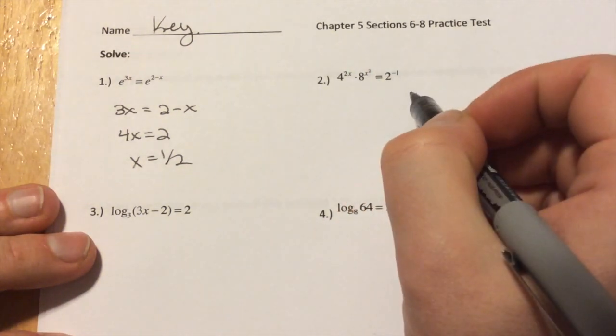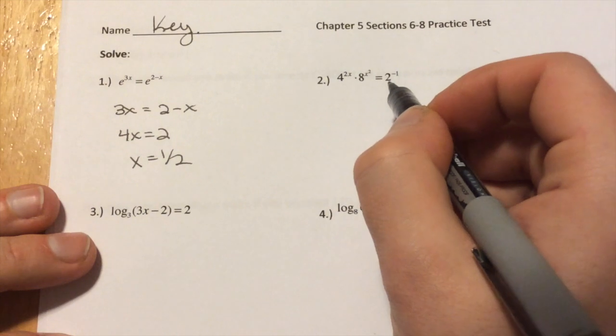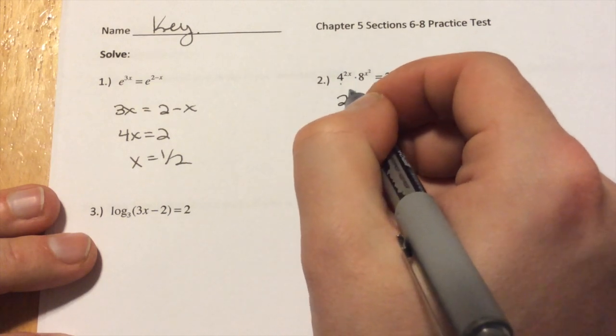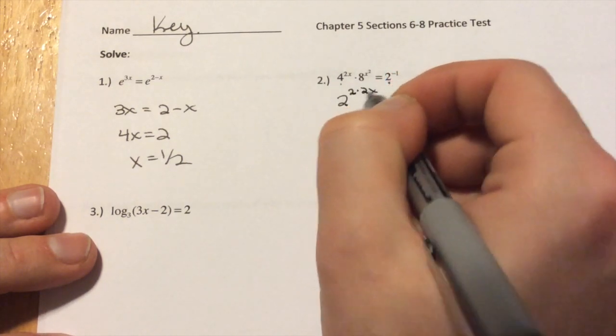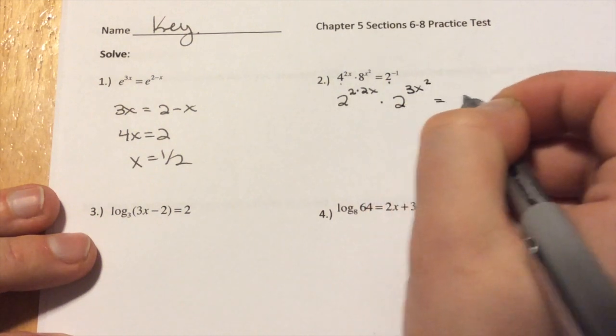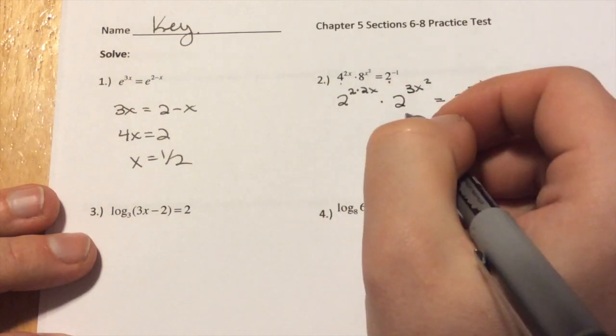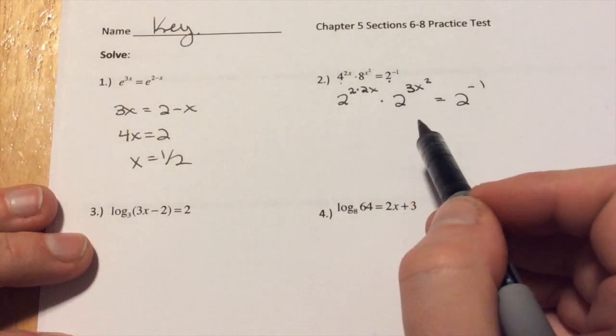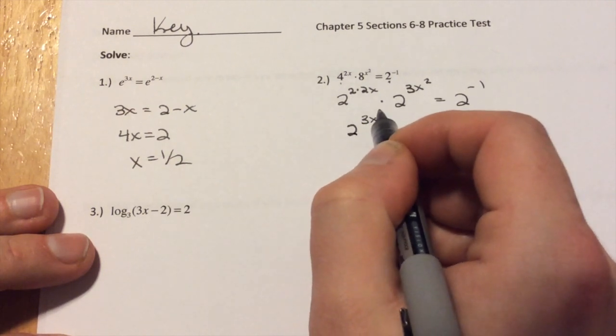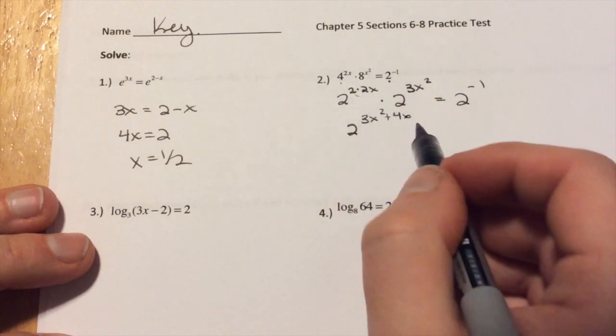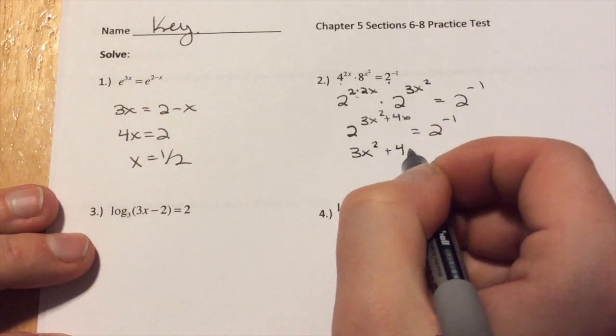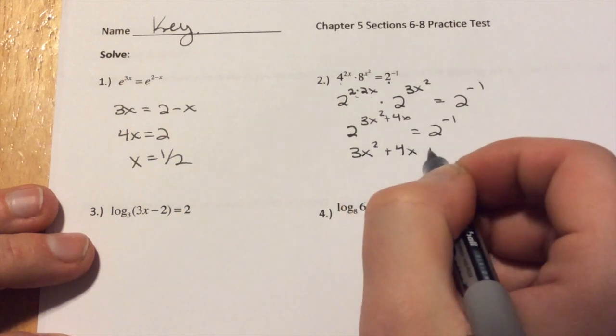Number 2. We need all of these to have the same base. So the lowest base here is 2, and we can write 4 as a power of 2, and we can write 8 as a power of 2. So to write 4 as a power of 2, that's 2 squared times 2x. 8 is 2 cubed, so that's times 2 to the 3x squared, and that's 2 to the negative first. Now the last bit is, when we multiply like bases, we add the exponents. So we have 2 to the 3x squared plus 4x, because 2 times 2, equals 2 to the negative first.